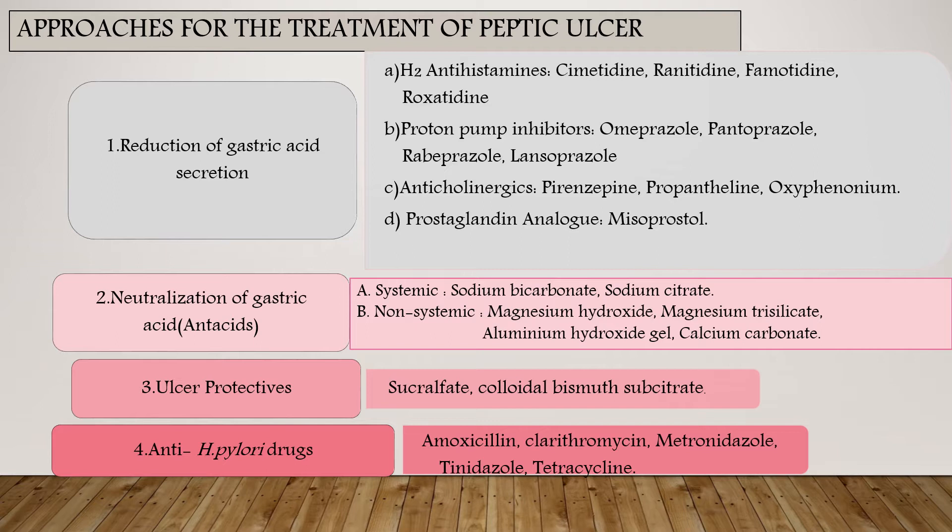Ulcer protectives used for treatment of peptic ulcer are sucralfate and colloidal bismuth substrate. Anti-H. pylori drugs used include amoxicillin, clarithromycin, metronidazole, tinidazole, and tetracycline.